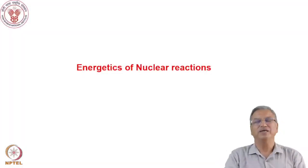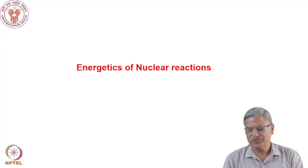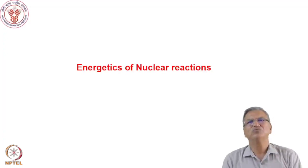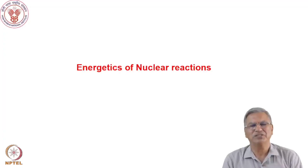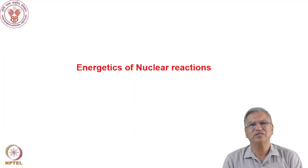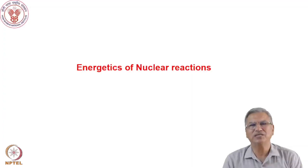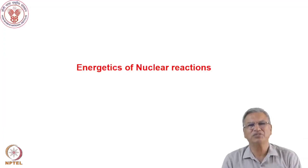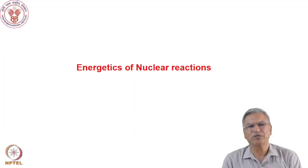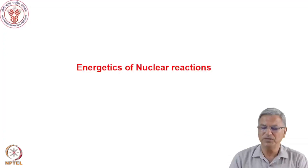Hello everyone. In the previous module, we discussed the conservation laws that govern a nuclear reaction and also the Q value — how to calculate the Q value from the masses of the nuclei. The Q value could be positive or negative and accordingly they are called exergic and endoergic. Now we will discuss the energetics of nuclear reactions, particularly what energy is available for inducing the nuclear reactions — that is called the energy available in the center of mass system — and also the kinematics of the nuclear reactions, whereby you can calculate the energy of a particular reaction product at a particular angle.